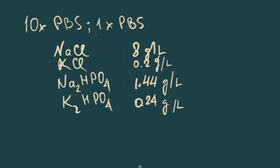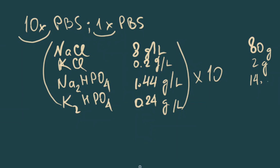It's easy to solve. We just need to make 10x out of 1x, and this means we need to multiply it by 10. In the end we get 80 grams, 2 grams, 14.4 grams, and 2.4 grams per liter.